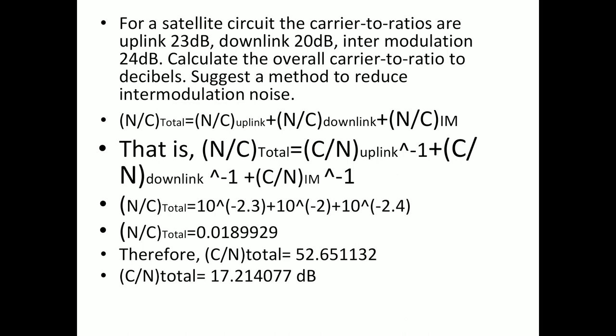Let's solve one problem. For a satellite circuit, the carrier to noise ratios are: uplink 23 dB, downlink 20 dB, and intermodulation 24 dB. We have to calculate the total carrier to noise ratio in dB and suggest a method to reduce the intermodulation noise. We know that N/C total equals N/C uplink plus N/C downlink plus N/C intermodulation.